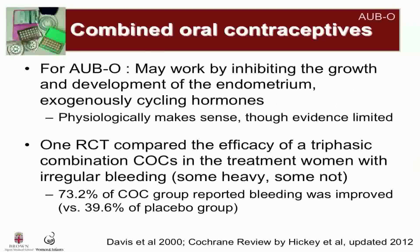Those previous slides referred to treatment of patients with heavy and regular bleeding — AUB-E — caused by endometrial dysfunction. Combined oral contraceptives are also commonly used in clinical practice to regulate menstrual cycles for women with ovulatory dysfunction, AUB-O. In this circumstance, they may work by inhibiting the growth and development of the endometrium and exogenously cycling the hormones. Physiologically it makes a lot of sense, although the evidence is quite limited. One randomized clinical trial showed that they're likely effective at regulating bleeding and found that 73 percent of combined oral contraceptive users reported bleeding was improved, though this study included a very heterogeneous group of bleeders ranging from scant and infrequent to heavy and irregular.